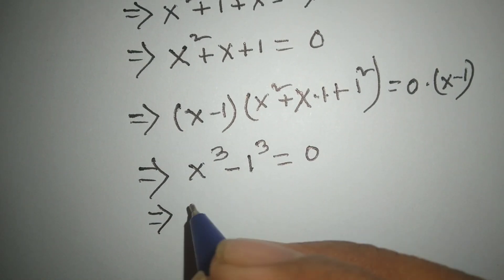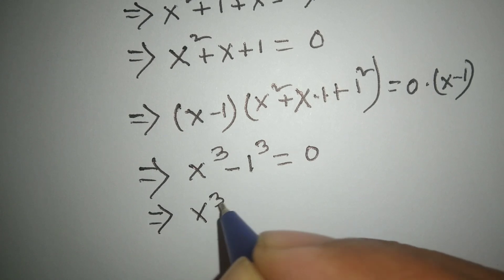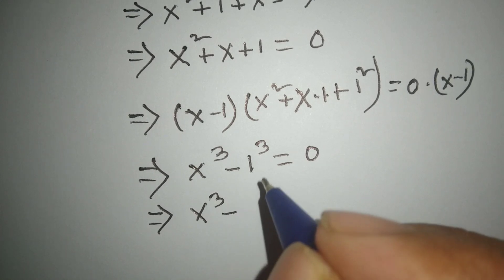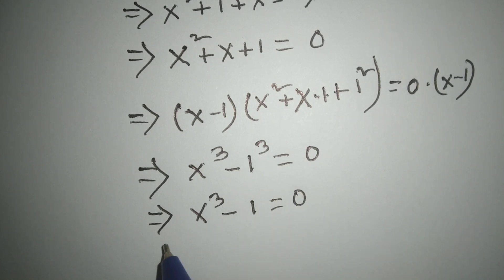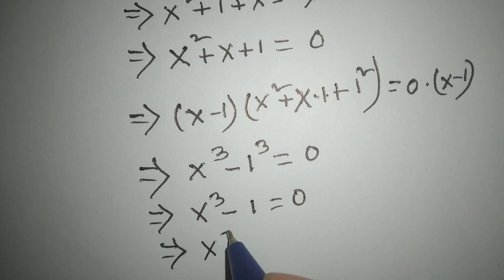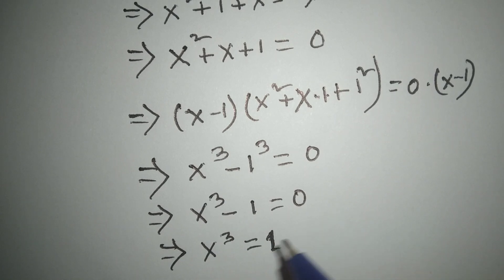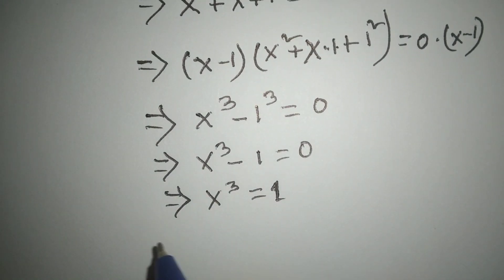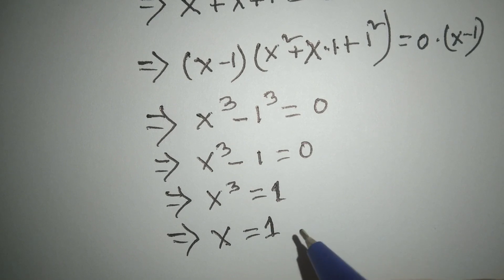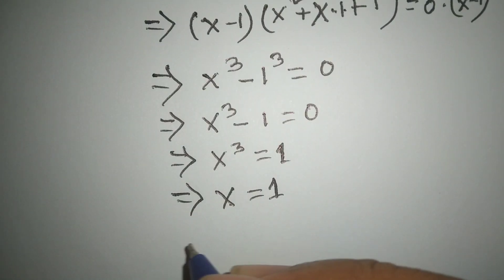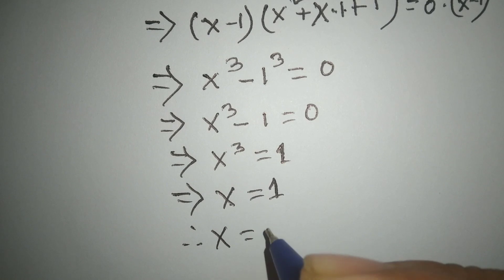We simplify that x cubed minus 1 equals 0, therefore x cubed is equal to 1.